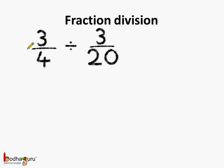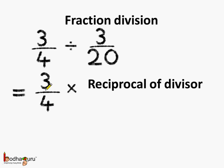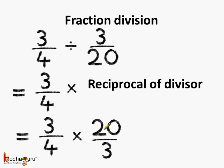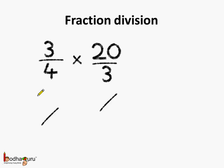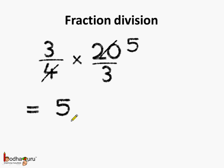Now let us take another example: what is 3 by 4 divided by 3 by 20? It means 3 by 4 needs to be multiplied by the reciprocal of the divisor, which is 3 by 20. The reciprocal of 3 by 20 is 20 by 3. So we need to do 3 by 4 multiplied by 20 by 3. We can reduce this — 4 fives are 20, and 3 and 3 get cut — so the answer is equal to 5.